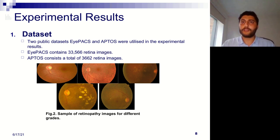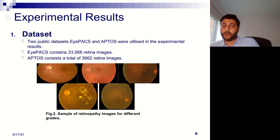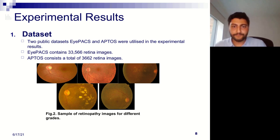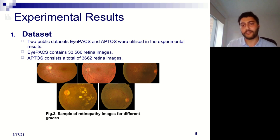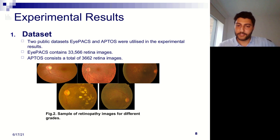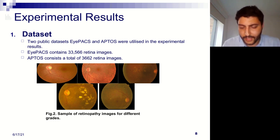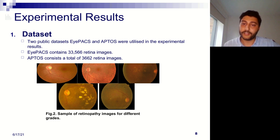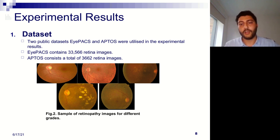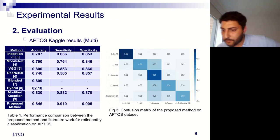For our experimental results, we used two public open-access datasets: IDRiD and APTOS, both available on Kaggle. IDRiD contains around 333,500 retina images, and APTOS consists of approximately 3,600 retina images. The images shown in this slide are samples for different classes, where each class represents a severity level: class 0 is healthy, class 1 is mild, class 2 is moderate, class 3 is severe, and class 4 is proliferative — five classes in total.